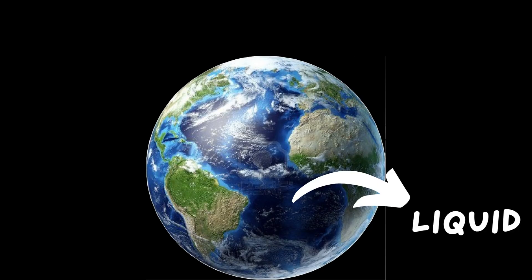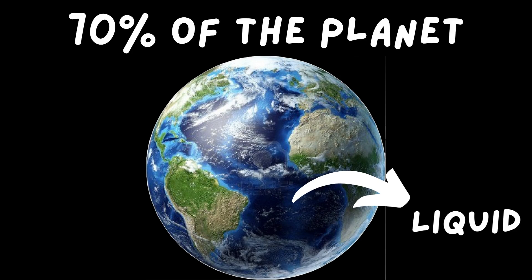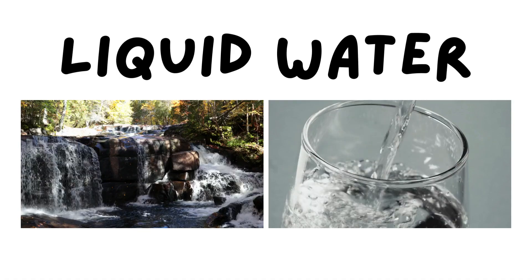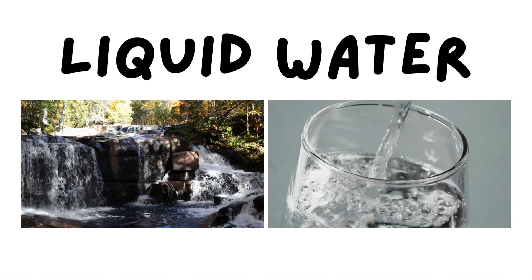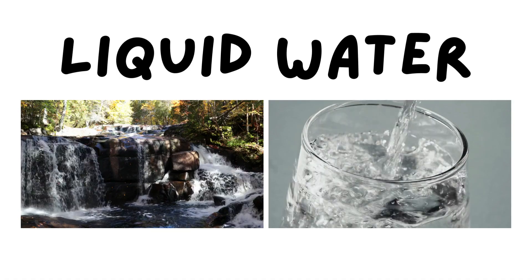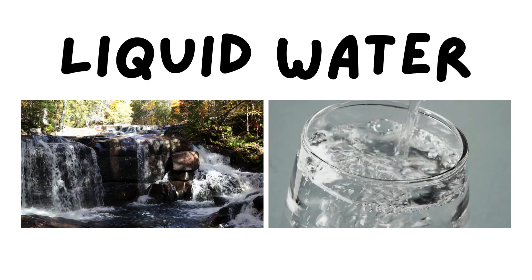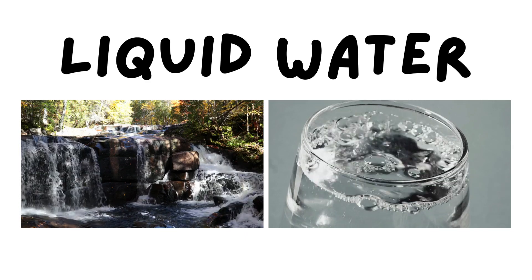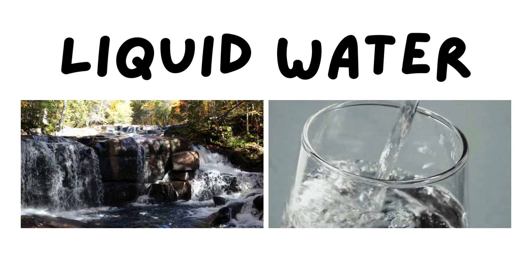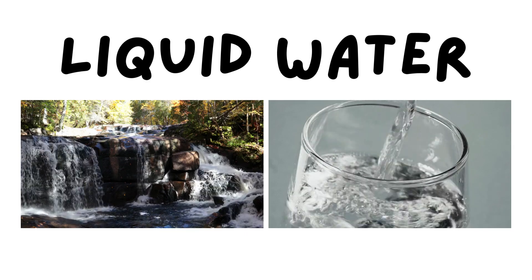Water's most common form is liquid, and it covers 70% of the planet. We know when water is a liquid because it flows and moves to take the shape of whatever it's in or on.